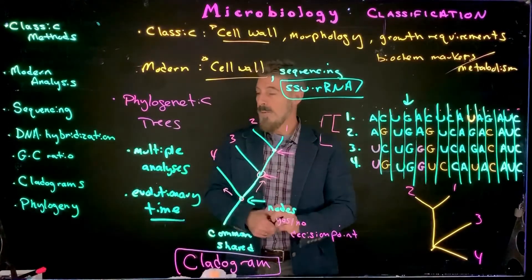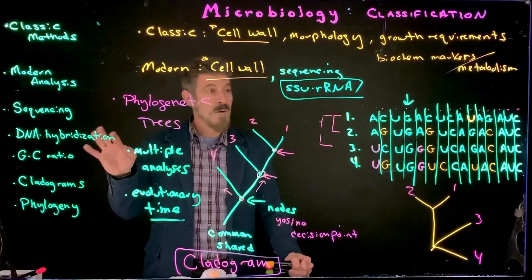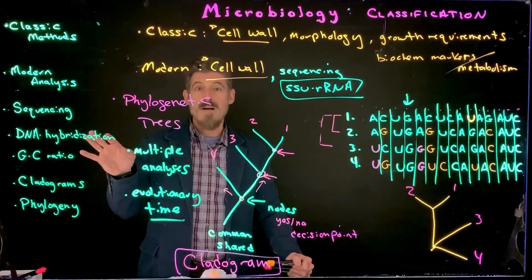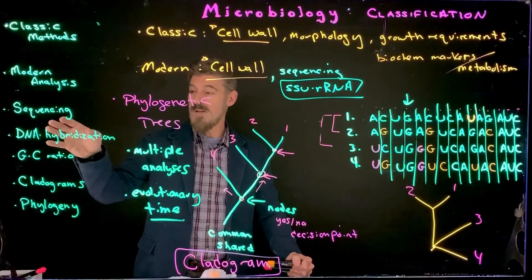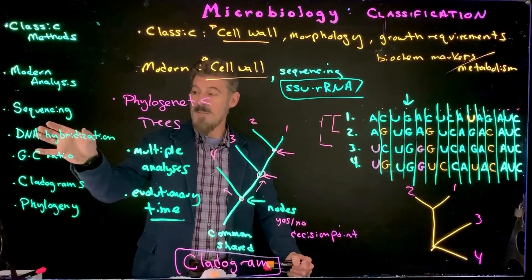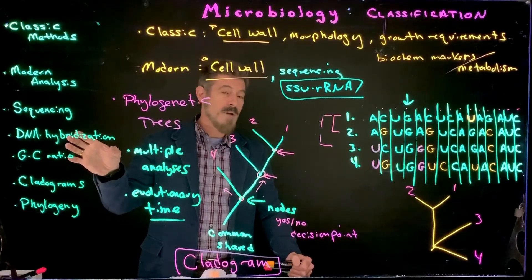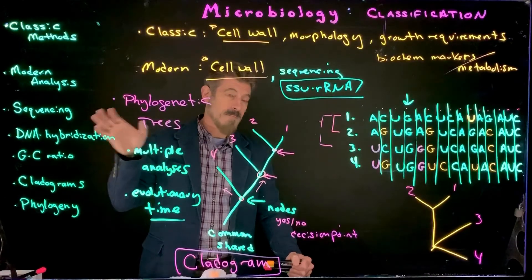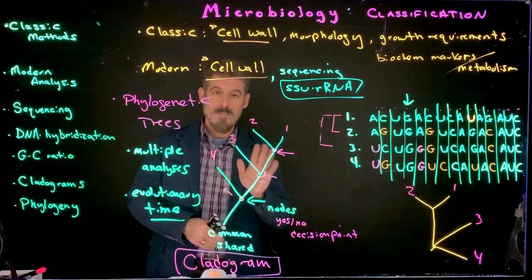What I'm also going to look at is other ways bacteria are classified using DNA hybridization and a GC ratio, but we're kind of out of space, so we're going to cover that separately.